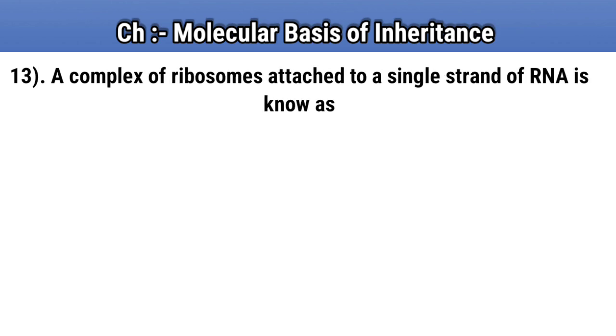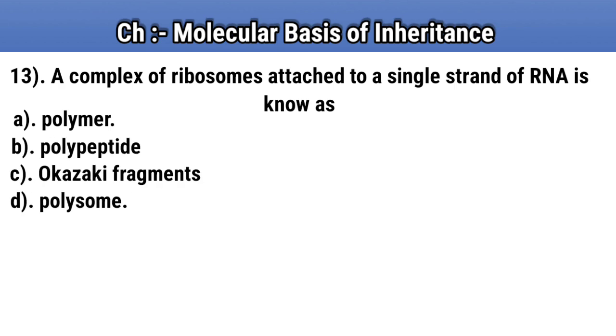Question number 13. A complex of ribosomes attached to a single strand of RNA is known as. Option A: polymer. Option B: polypeptide. Option C: Okazaki fragment. Option D: polysome. Answer D: polysome.